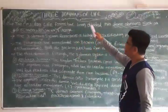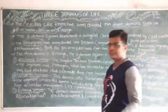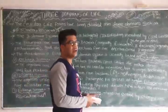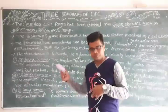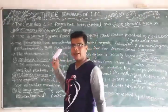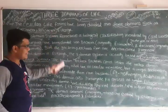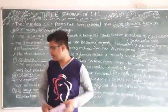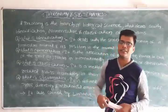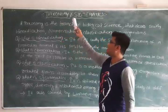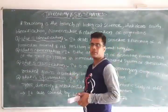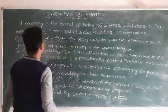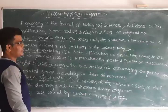This is all about the three domains of life. After that we can discuss Taxonomy and Systematics — what is Taxonomy and what is Systematics. These will be described after the three domains. Taxonomy is a branch of biology — it is the branch of biological science that deals with identification, nomenclature, and classification of organisms.